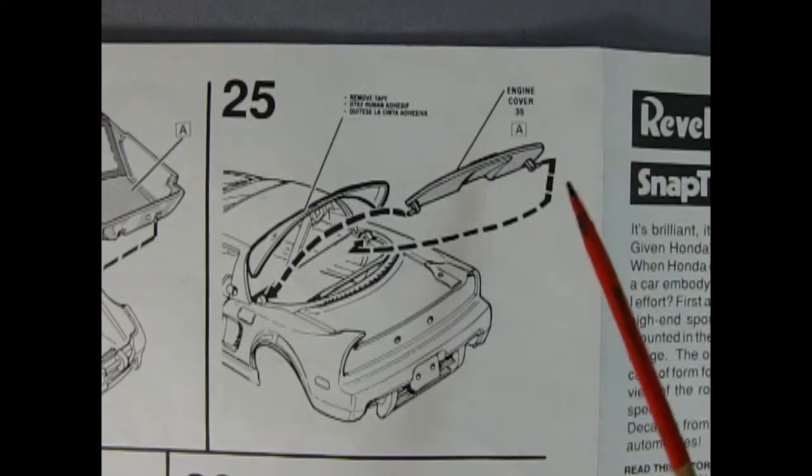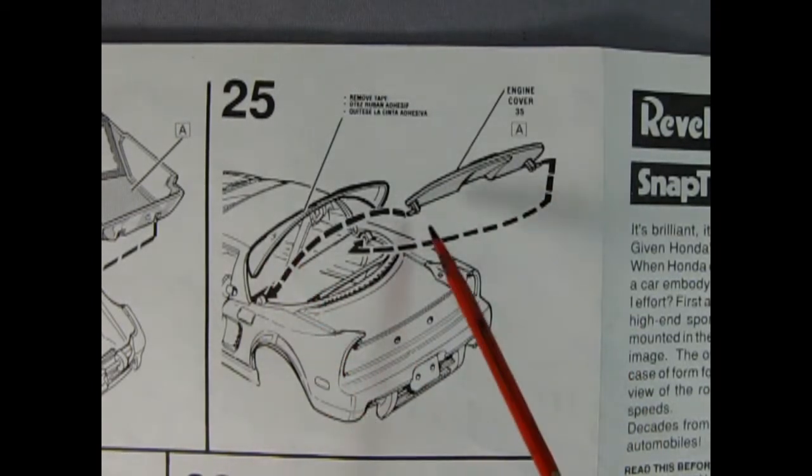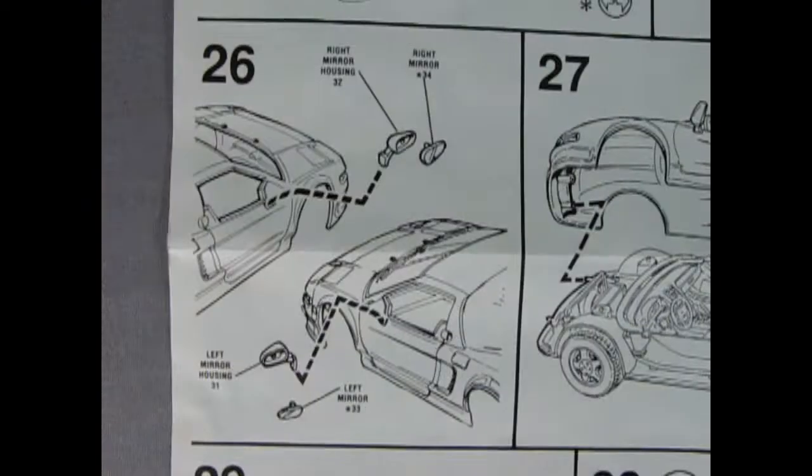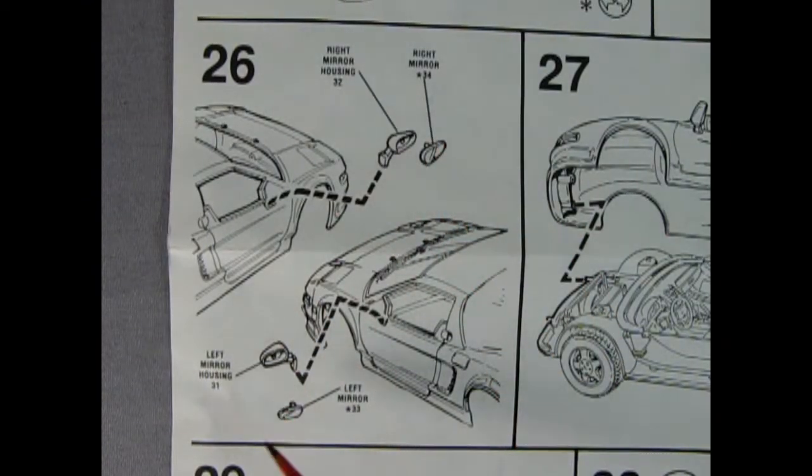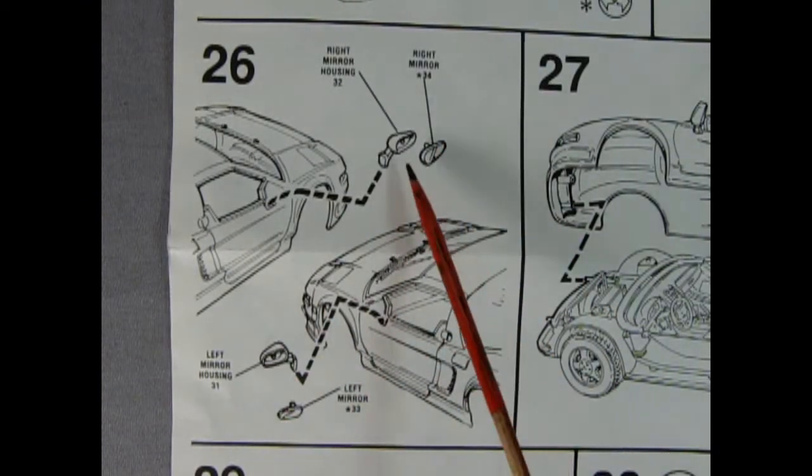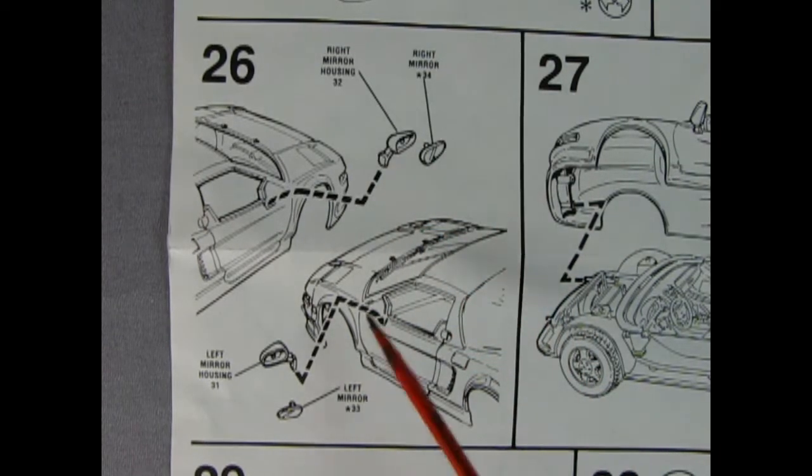Panel 25 shows our engine cover. So then you could lift up the glass and lift up the engine cover and see that nice motor that you made down below. Panel 26 shows our mirrors being put in place. So you got your left and right mirror housings as well as the chrome glass.